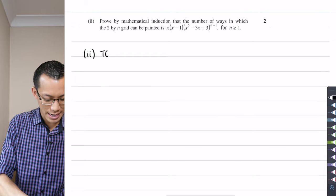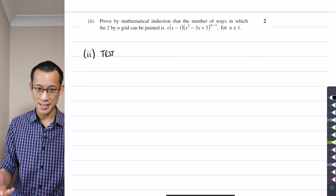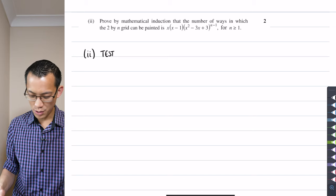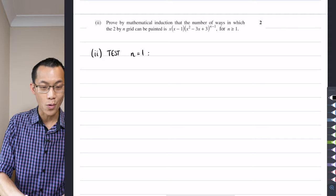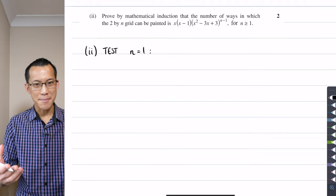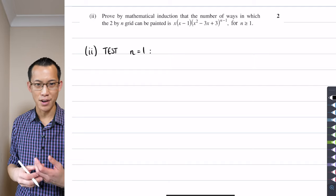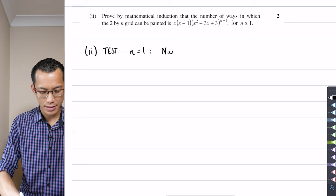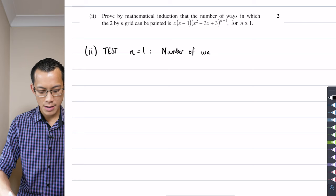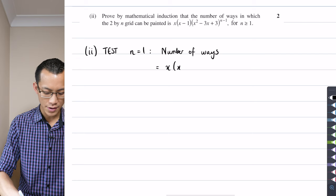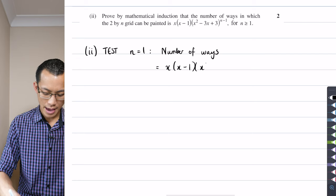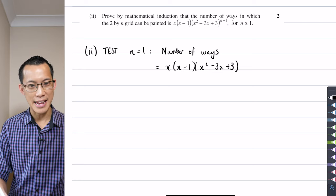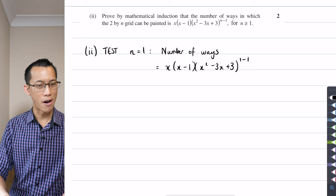So let's start out with a test of the base case and the base case in this case you can see is defined there n is greater than or equal to 1 so I'm just going to say test for n equals 1. That statement, right? All the x's are independent of that n so they all just stay in place. The statement will tell us that the number of ways is going to be equal to x times (x-1) times (x² - 3x + 3) which we got from part 1, and now I substitute in n equals 1 so it's 1 take away 1. That's it.